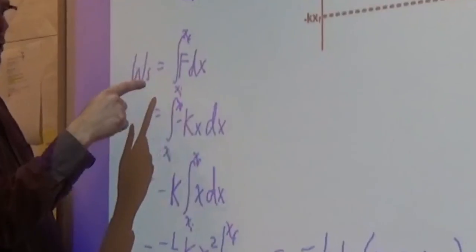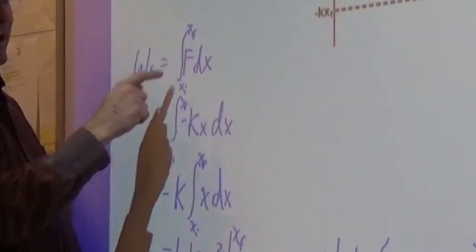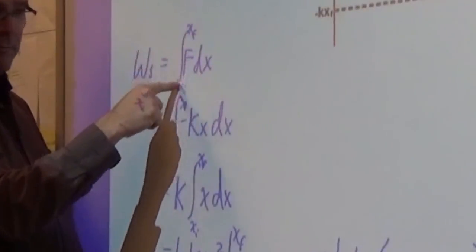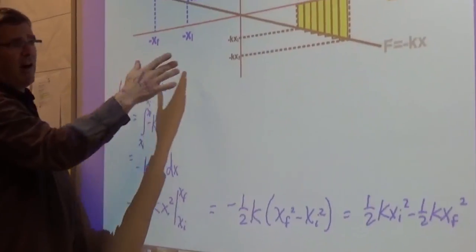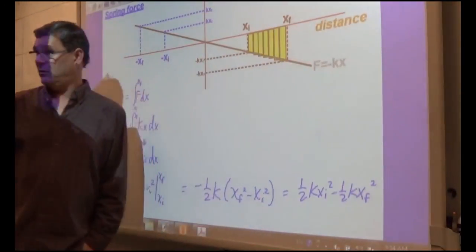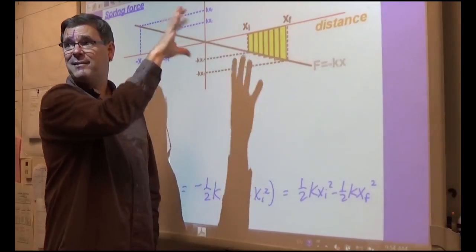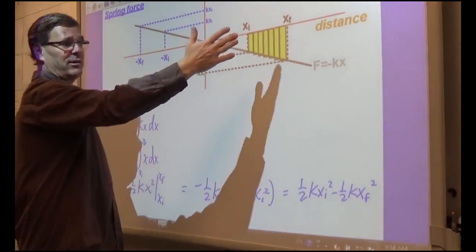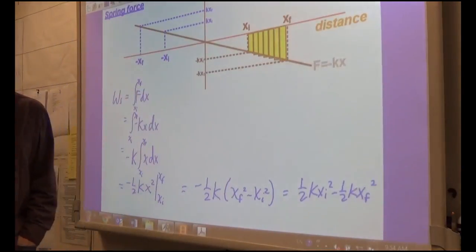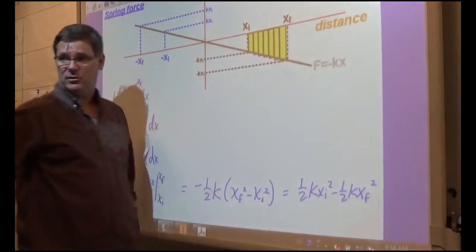This is the definite integral, which has our limits of integration from the initial position to the final position. The integral stands for a big S for sum — the sum of all these little areas, which is the interval times the force: base times height of that rectangle, the area of that rectangle. So the sum of all those areas is the amount of work done by the spring force from this position to that position.